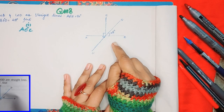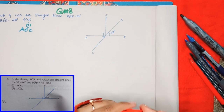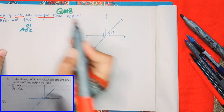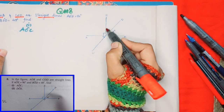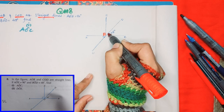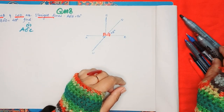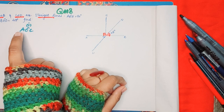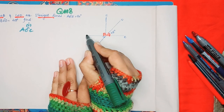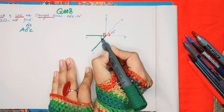In question number 8, we have a figure given. In the figure, AOB and COD are straight lines, as stated. AOE is 90 degrees, as you can see. In the first part, what we have to find is angle AOC. Let us locate where AOC is — this is O, so the angle is here. AOC means this is the angle I have to find.